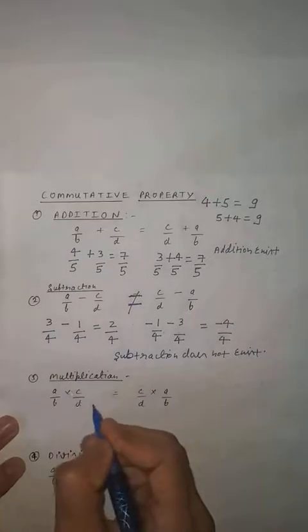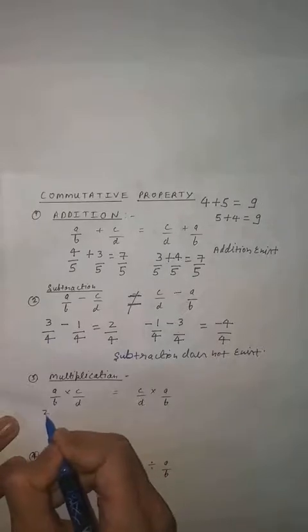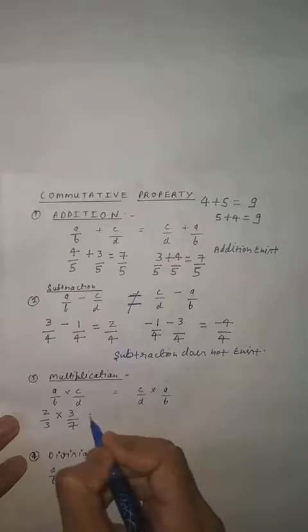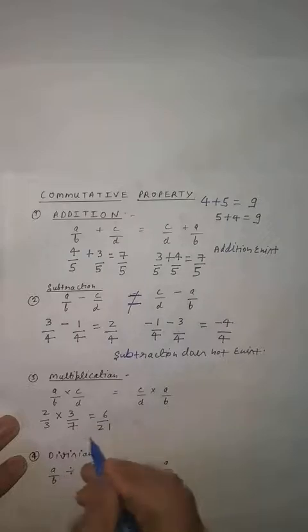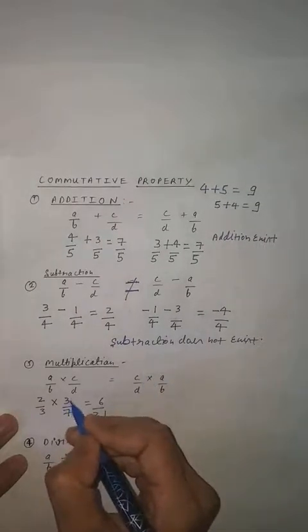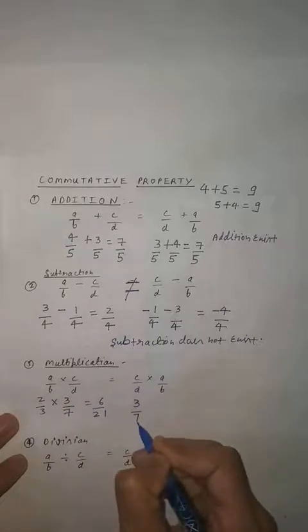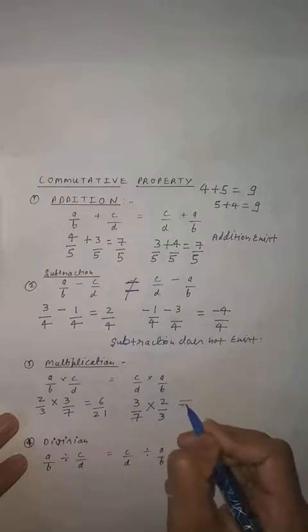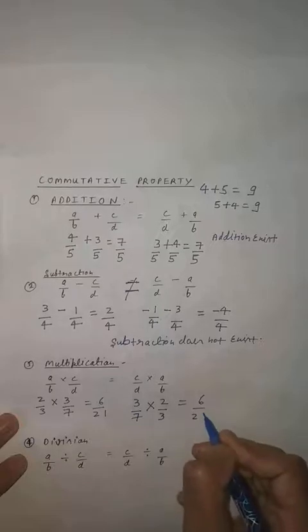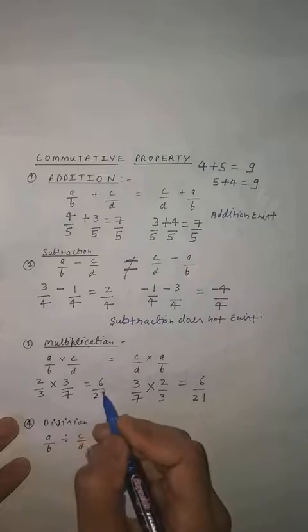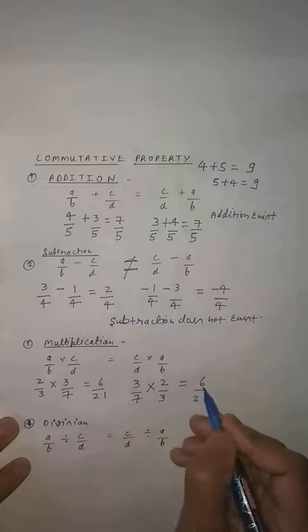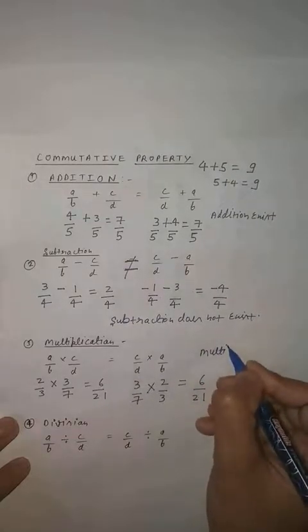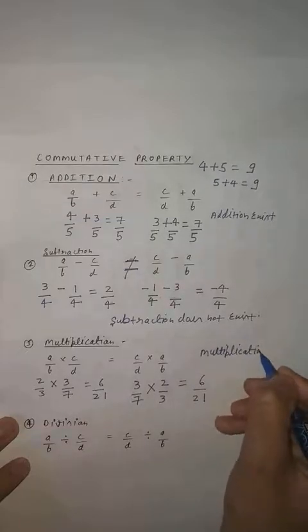Now students we will check in multiplication. Take the example 2 by 3 multiply by 3 by 7. So what will it give? It will give 6 upon 21. Now again we will check C by D, which is 3 by 7, multiplied by A by B, which is 2 by 3. This will also give 6 upon 21. So here also both results are 6 upon 21, so in commutative property multiplication exists.